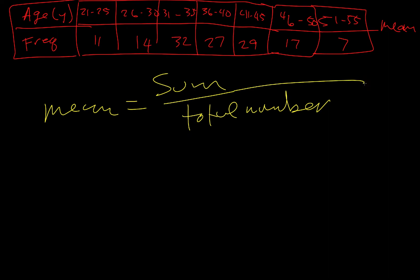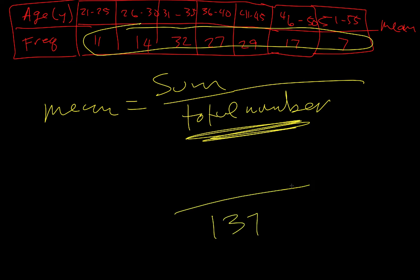To find the total number of data points, all we have to do is add all of these numbers up. So if we do 11 plus 14 plus 32 plus 27 plus 29 plus 17 plus 7, that's gonna give us this bottom total number, and that is 137.